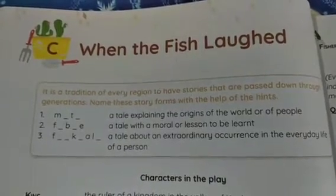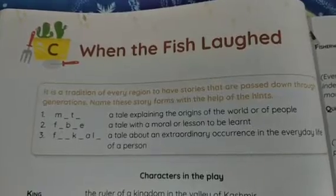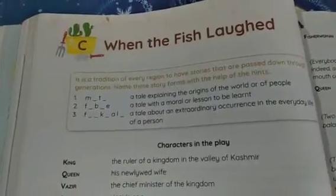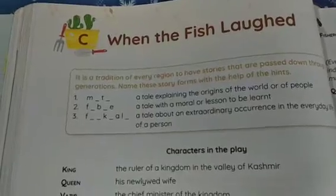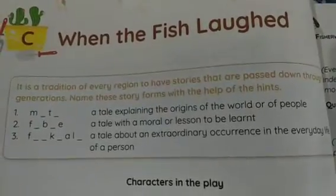Welcome to video number 55. In this video I'm going to start a very interesting story — 'When the Fish Laughed.' It is an Indian folk tale collected from the book 'Indian Fairy Tales,' edited by Joseph Jacobs, published by Putnam's Sons, New York and London, in 1910. This book holds 29 Indian folk tale stories, and this particular story is a Kashmiri folk tale.